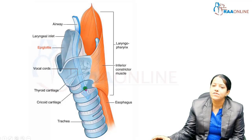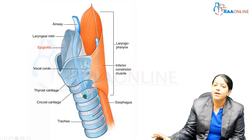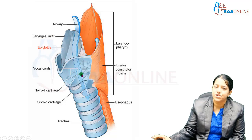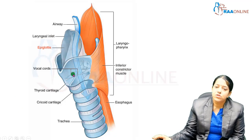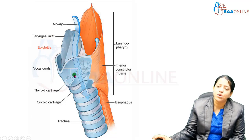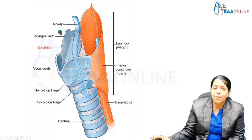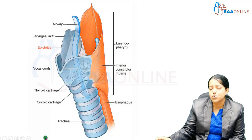Air passes through the larynx and between the two vocal cords before entering the trachea. The space between the two vocal cords through which air passes is called the glottis, or rima glottidis, and this is the narrowest part of the larynx.